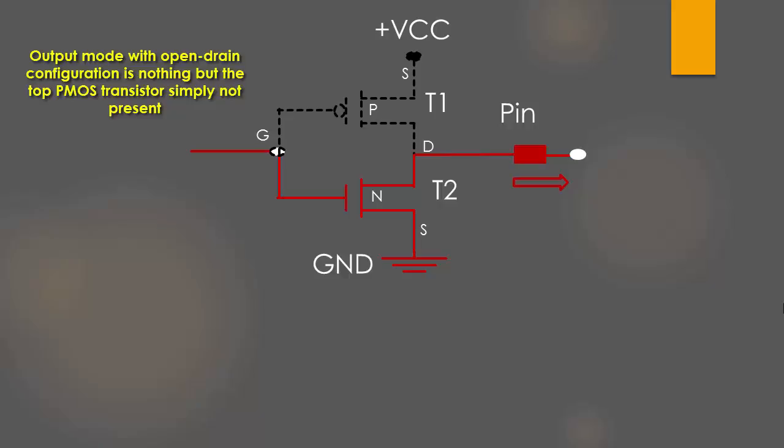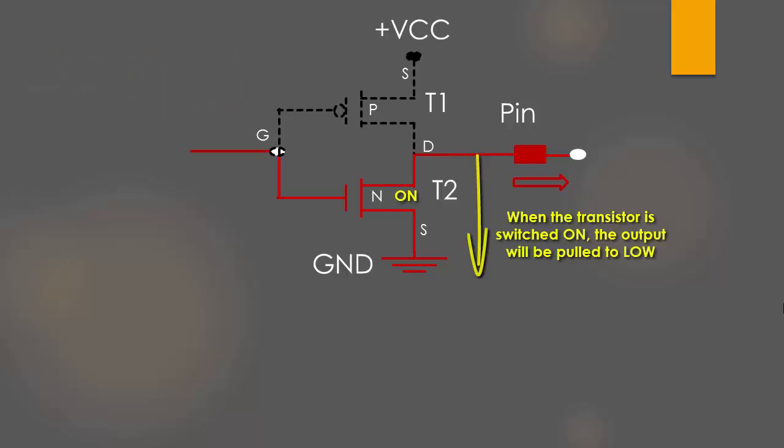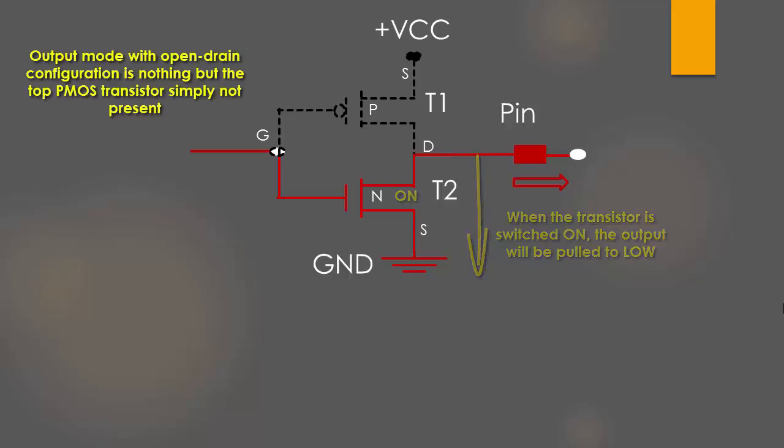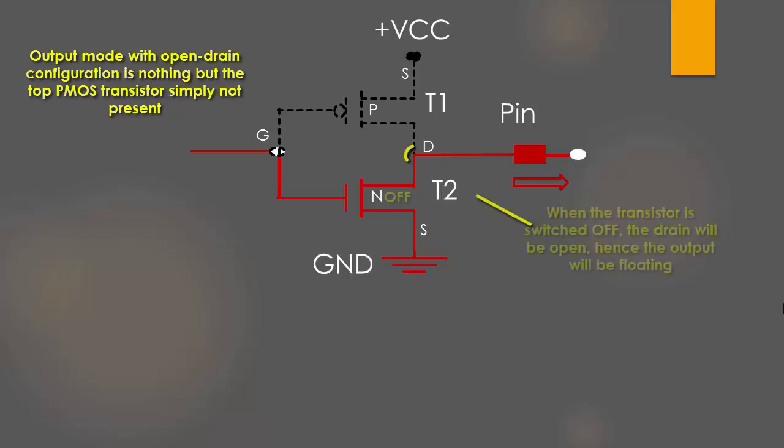So what you're left with is just a single NMOS transistor. When the transistor is switched on, the pin is pulled to ground. And when this transistor is off, the drain of the transistor will be floating or open.